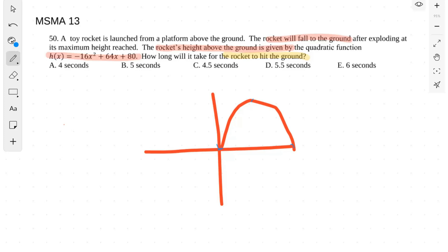So with this equation, what we're able to do is factor. Let's do that. First of all, you can take out negative 16 from the whole equation. So you have negative 16 times x squared minus 4x, because negative 16 times negative 4x is 64x minus 5.